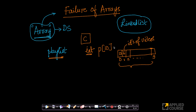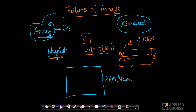The moment you declare this in C, what happens? Let us assume this is my memory or RAM. As soon as you do this, what C programming does at runtime is a very interesting thing: it basically creates within your RAM a space to store these integers — locations 0, 1, and so on. It allocates space to store these 10 integers in your memory. That is what C programming actually does.